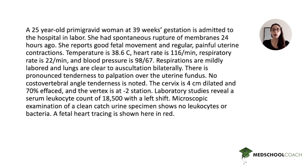We'll read from the top and highlight the key elements. A 25-year-old primigravid woman at 39 weeks gestation admitted to the hospital in labor. She had spontaneous rupture of membranes 24 hours ago. She reports good fetal movement and regular painful uterine contractions. Temperature is 38.6 Celsius, heart rate is 116, respiratory rate is 22, blood pressure is 98 over 67. I recommend highlighting the abnormal vital signs. The patient has a fever, is tachycardic, and has some mild tachypnea. The blood pressure is at the slightly lower end of normal but still normal.